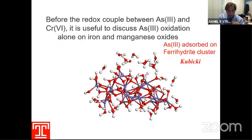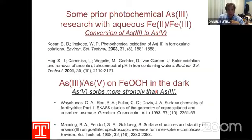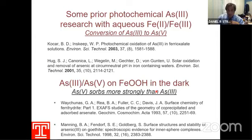First I want to talk about the photochemistry of arsenite on iron oxy-hydroxides. The materials I'll be looking at are two phases: ferrihydrite, which is an intrinsically nano-dimension material typically no larger than eight or nine nanometers in diameter; and goethite, one of the more prevalent iron oxy-hydroxides in nature. I'll show how, when these materials absorb light as small band gap semiconductors, they can absorb photon energy and do interesting chemistry with arsenite and chromate.